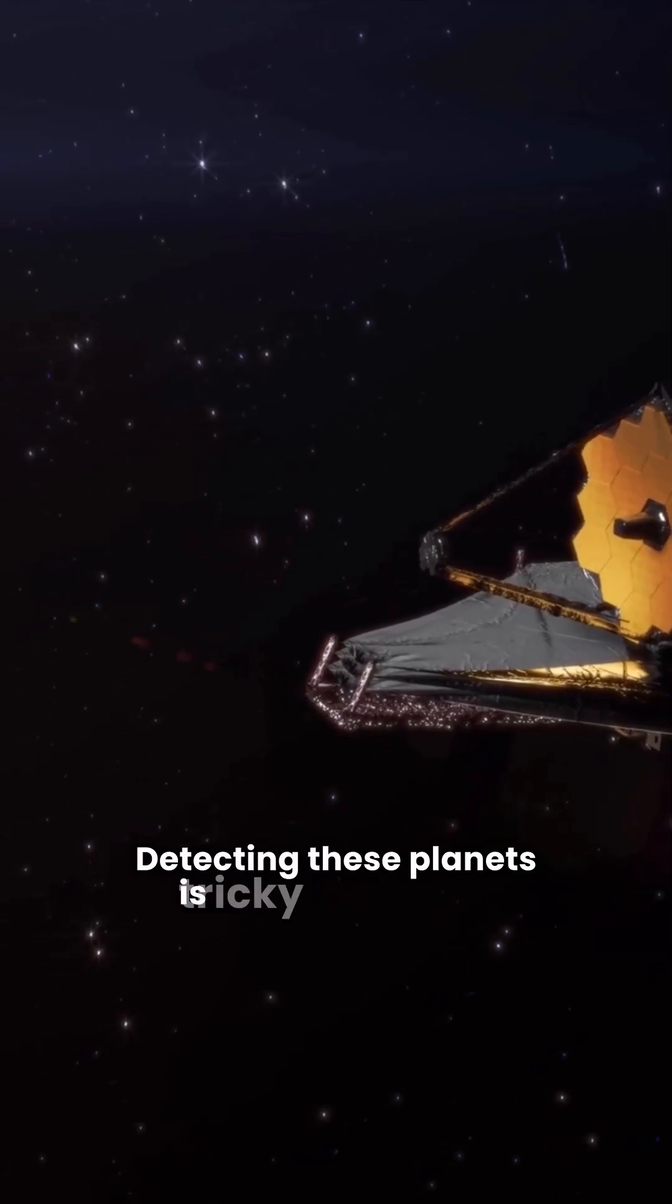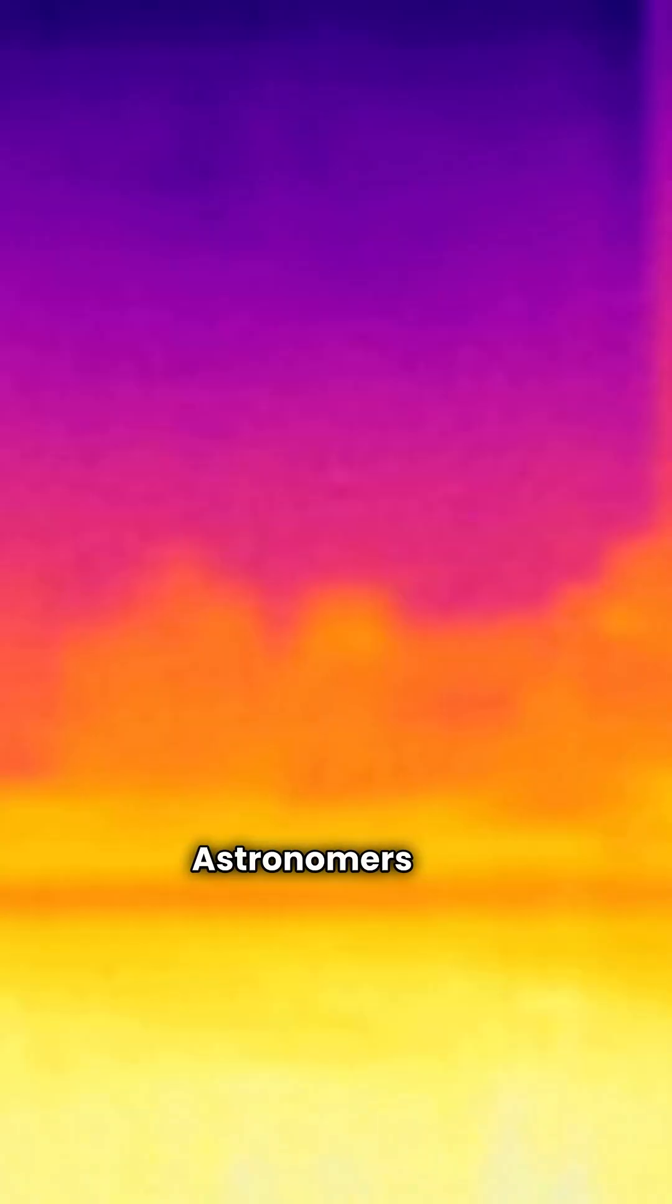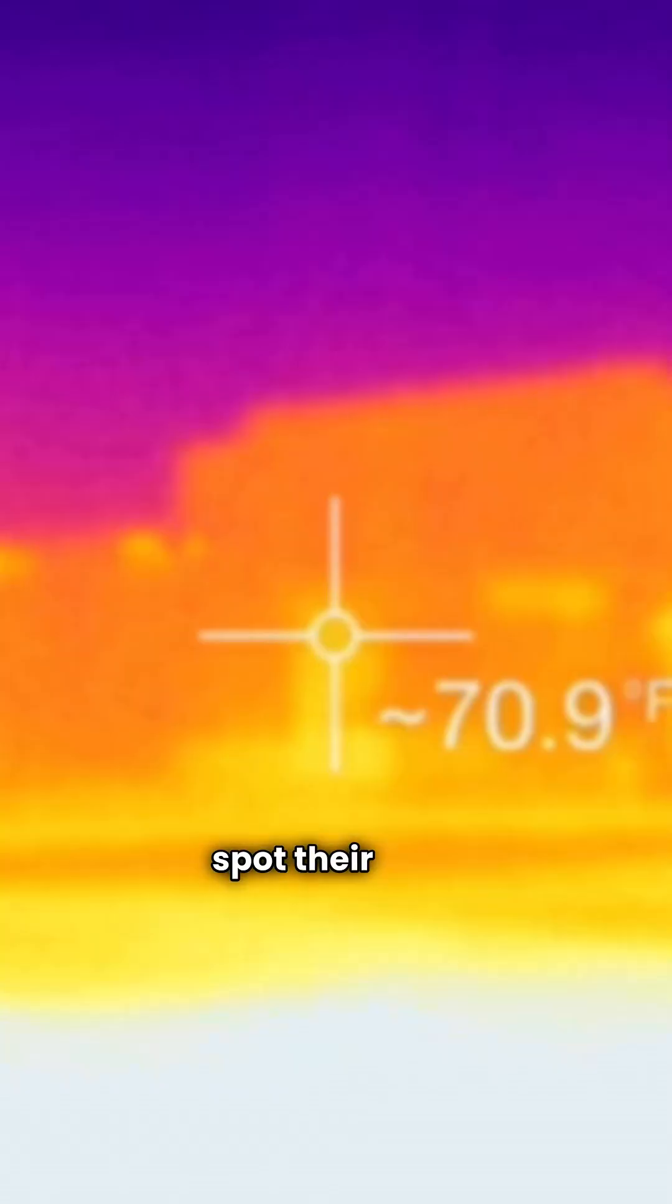Detecting these planets is tricky since they don't emit light like stars do. Astronomers use infrared instruments to spot their faint heat signatures.